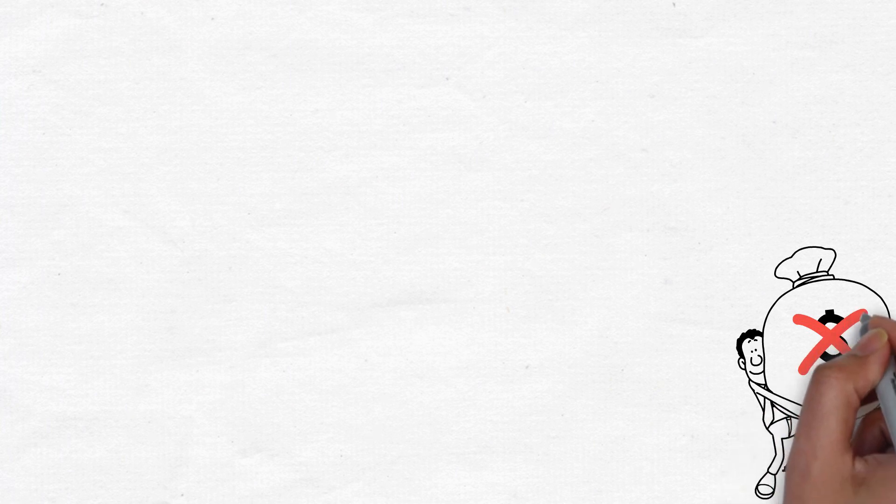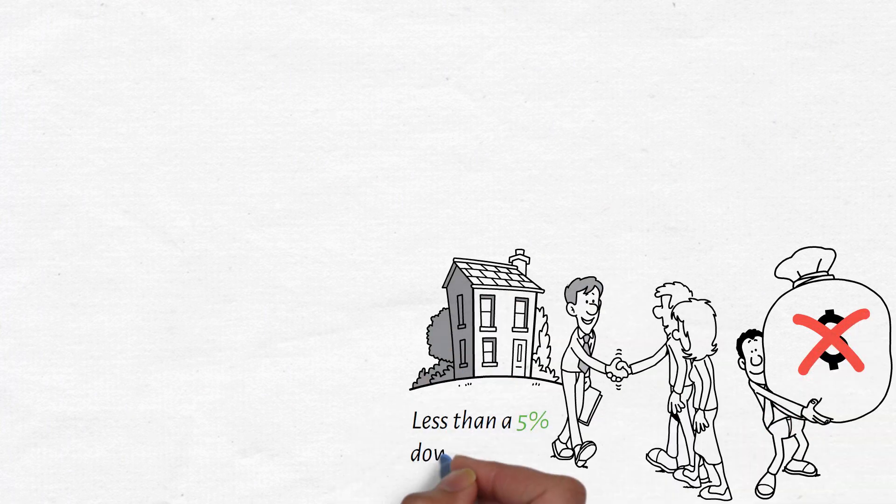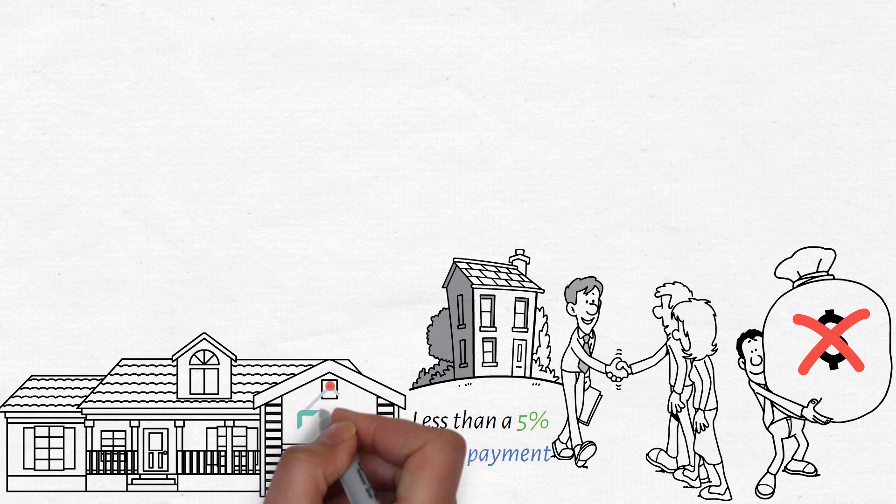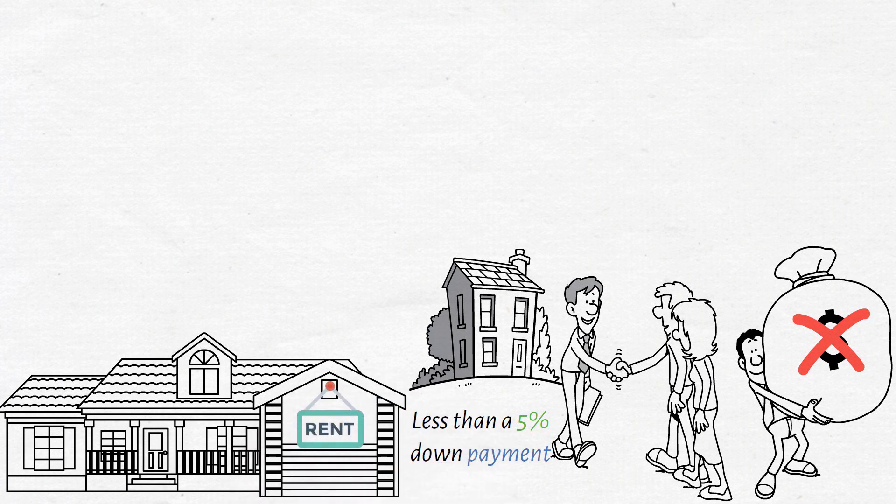You don't necessarily need a large down payment as it's possible to buy a home with less than a 5% down payment. Having space in your home that can be rented out provides you with a massive opportunity to reduce what's likely your largest expense.